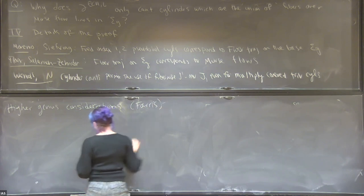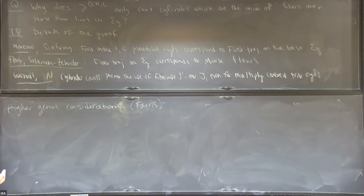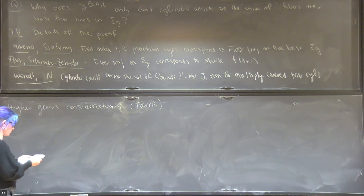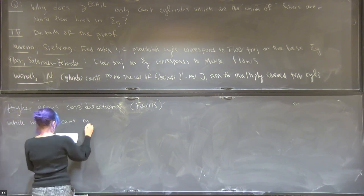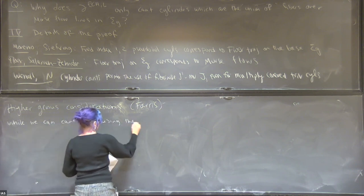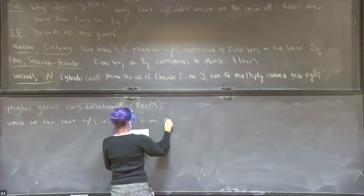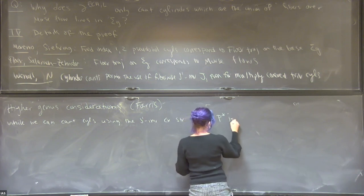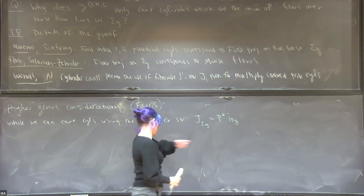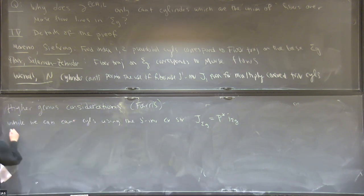The main contribution of Farris is actually seeing that this filtered ECH differential only corresponds to finite unions of cylinders reacting to Morse flow lines, and that the higher genus curves don't contribute. While we can count cylinders using the S1-invariant complex structure given by lifting the complex structure on the Riemann surface under the bundle map, we cannot use this lift for higher genus curves.